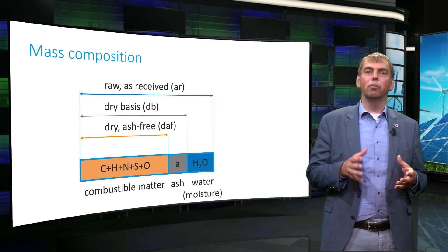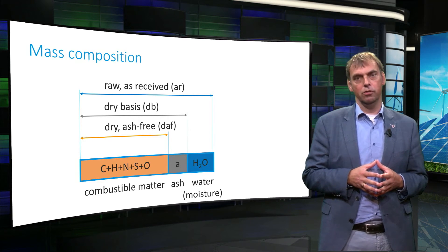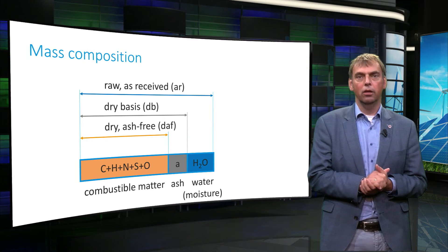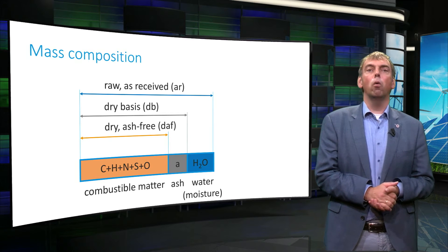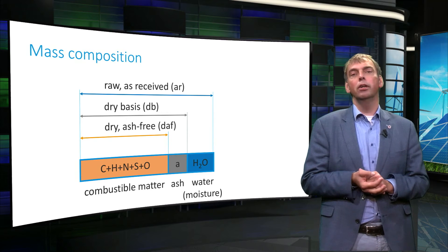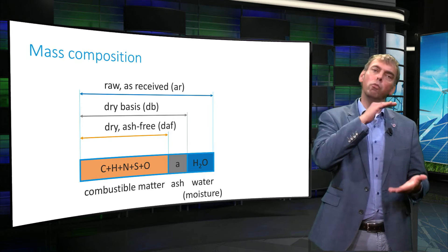Finally, a fuel composition can be given on a dry and ash-free basis, abbreviated as DAF. In this case, all non-combustible material, ash and moisture, has been removed, and the composition is usually normalized to 100%.